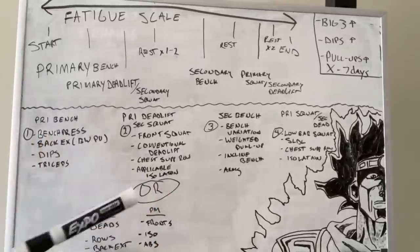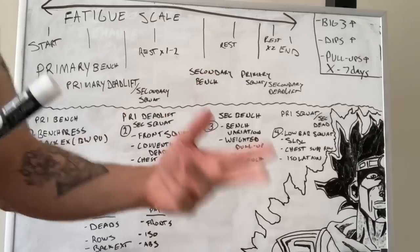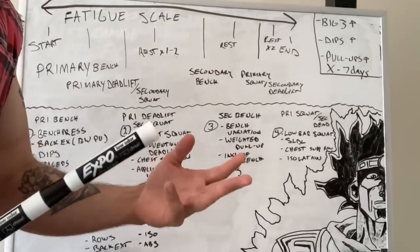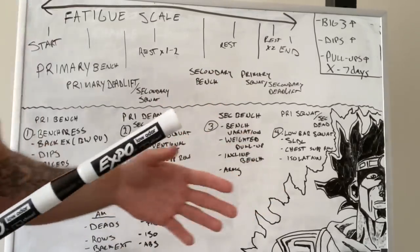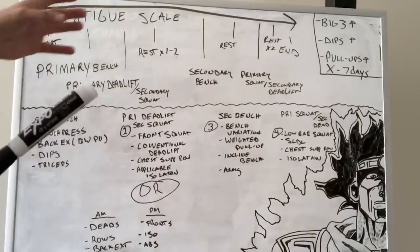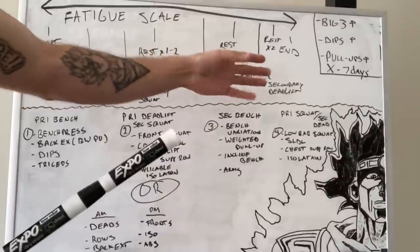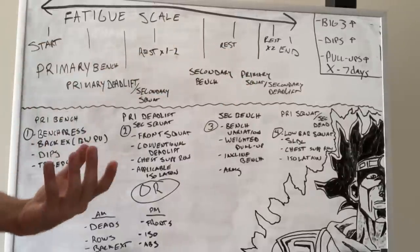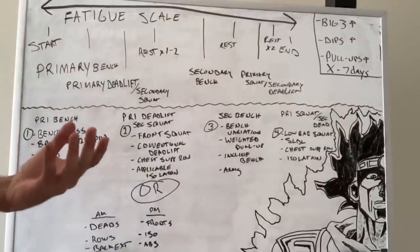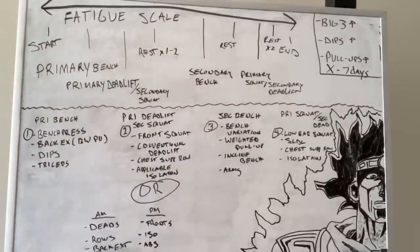The way that most training splits are structured — so like an upper-lower, for example — you go upper, lower, rest, upper, lower, rest, rest. You always put that primary day after you've had an extended period of time to rest.